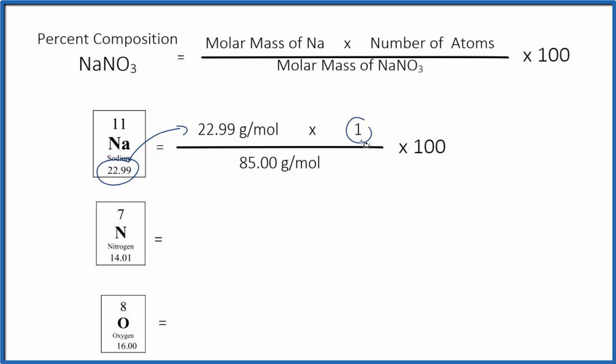So we multiply that by one, and we divide that by the molar mass of sodium nitrate. That's 85.00 grams per mole.